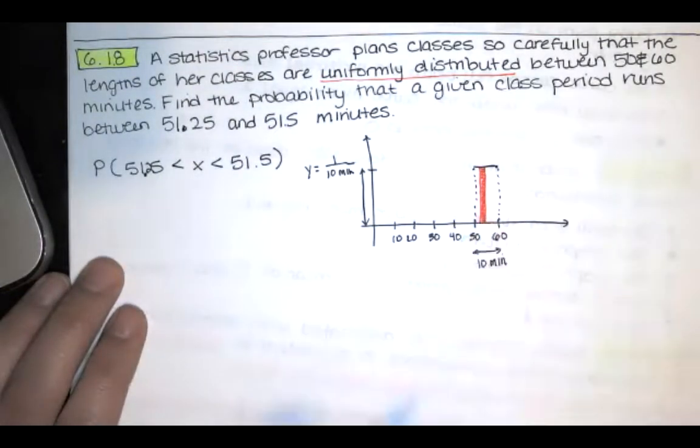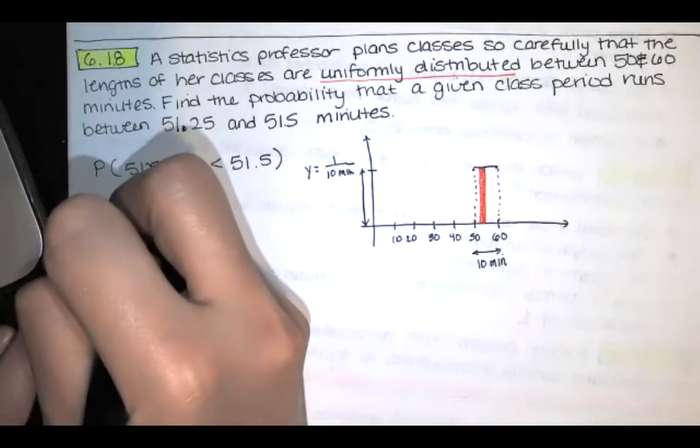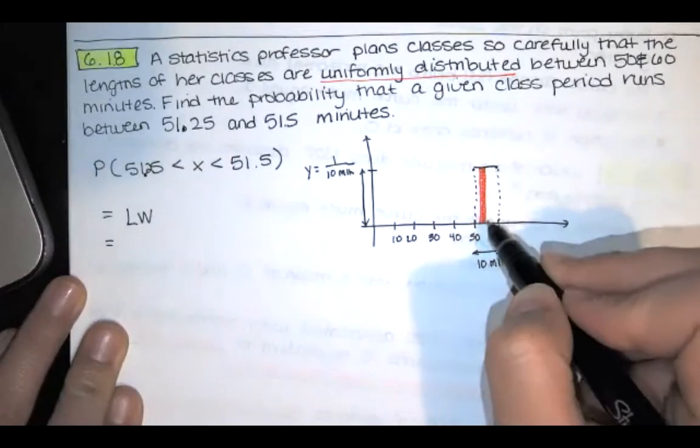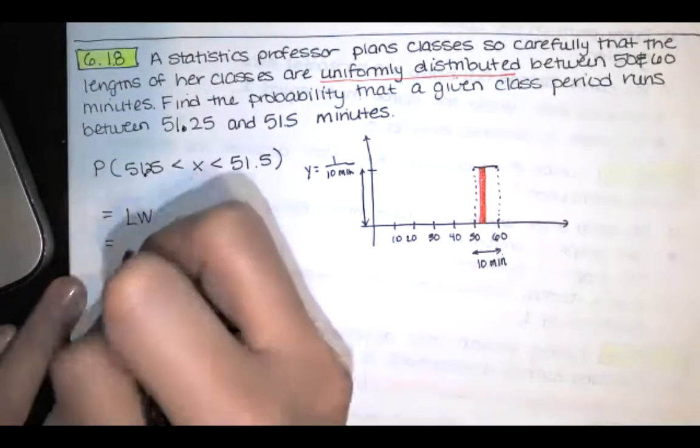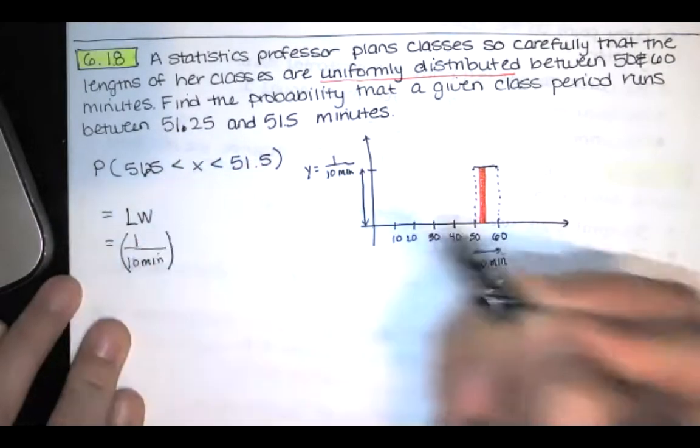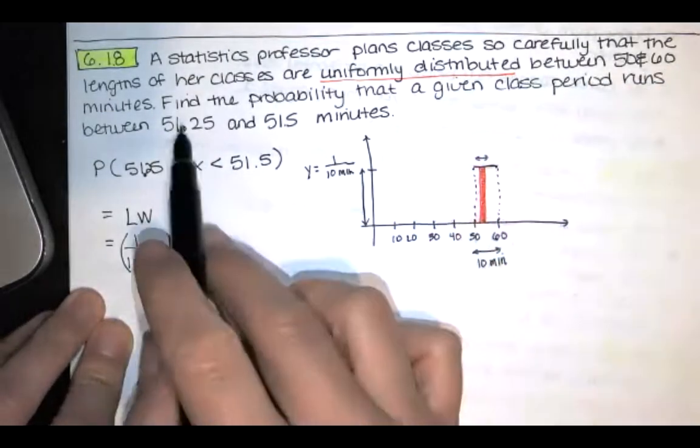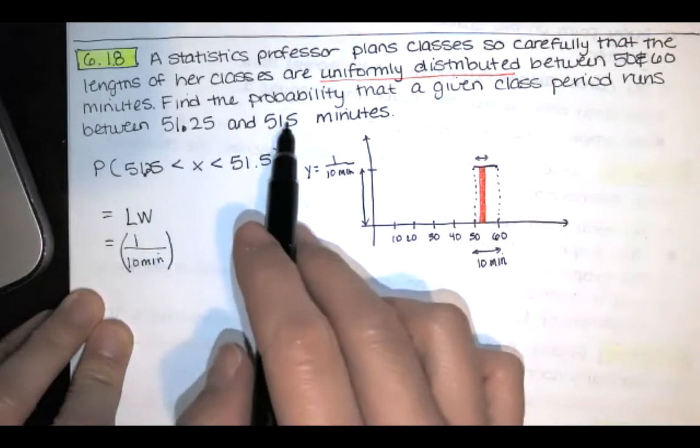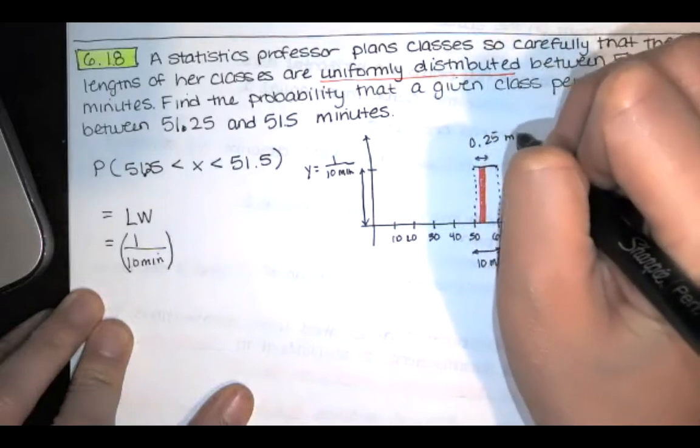And finding the area of a rectangle is pretty simple. We're just going to use length times width, or height times width if you prefer. The height is 1 over 10 minutes. And this width here, that's going from 51.25 to 51.5. If you subtract those, you're going to have 0.25 minutes.